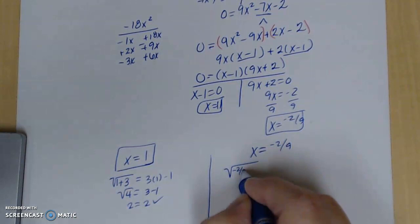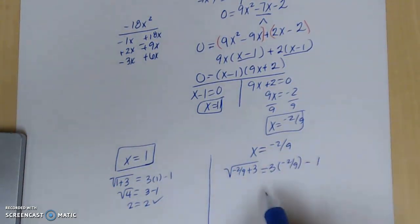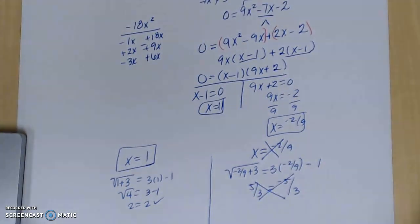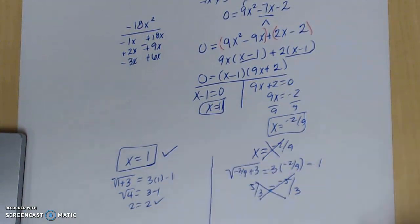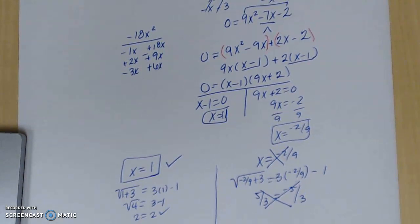Come over here. I'm going to plug in my -2/9. If you're not particularly fond of fractions or negatives, use your calculator as you work through this. -2/9 + 3 and square root it using my calculator gives me 5/3. 3 times -2/9 - 1 using my calculator gives me -5/3. Not the same. So this is not a solution for this problem. So you can see that x equals 1 is the only answer, even though when I got down to the quadratic, I really had two answers. So again, you must check your answer as you go to make sure you're getting these correct.